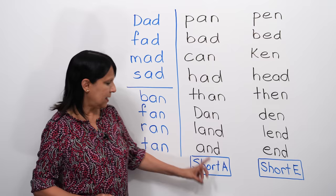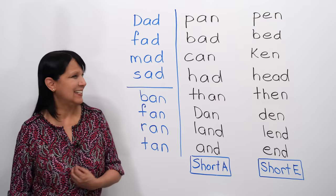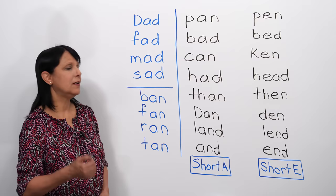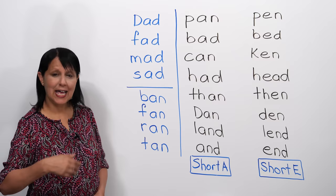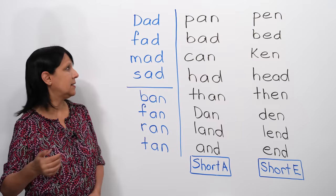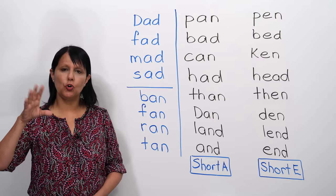But first, let's say a lot of words that have this short A sound. So repeat after me. Dad. Fad. Mad. Sad. So you see those all rhymed. Dad, fad, mad, sad. On purpose, because I want you to get used to opening your mouth like that, each time.